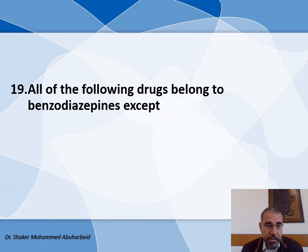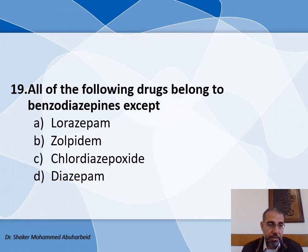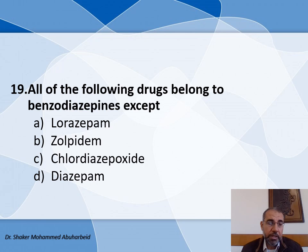Question number nineteen: All of the following drugs belong to benzodiazepines except — some of the choices belong to benzodiazepines; only one is non-benzodiazepine. The choices are: A) Lorazepam, B) Zolpidem, C) Chlordiazepoxide, and D) Diazepam. Lorazepam, chlordiazepoxide, and diazepam are all benzodiazepines, but Zolpidem is a non-benzodiazepine, so the correct answer is B.